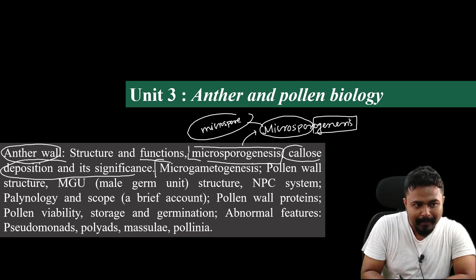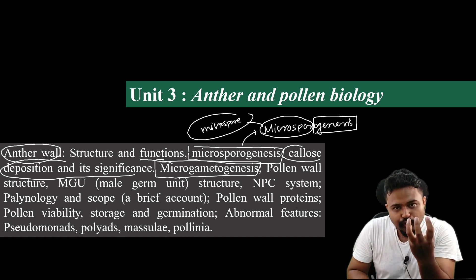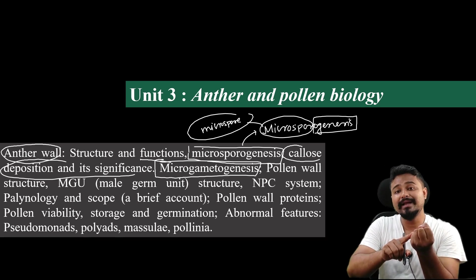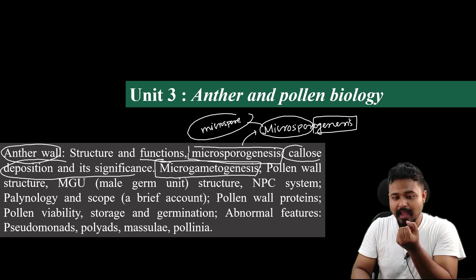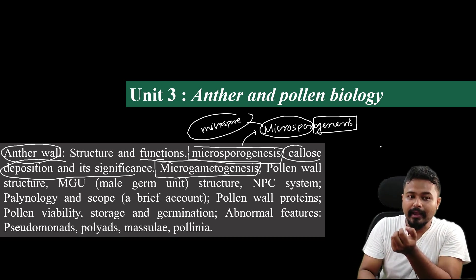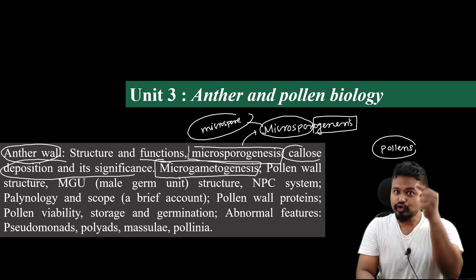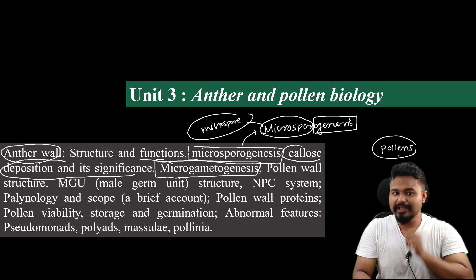The next topic is Microgametogenesis. If the microspore has developed, this microspore then changes into mature pollen grains. Microsporogenesis results in haploid (n) microspores.